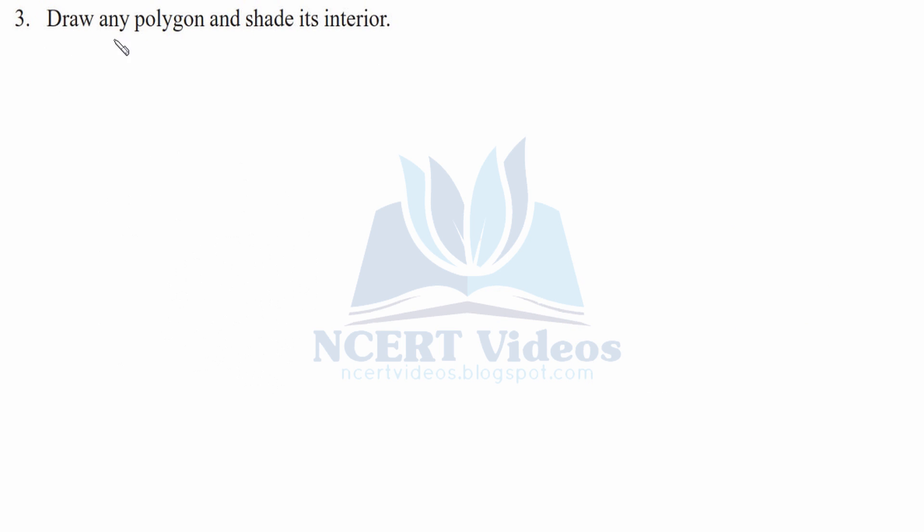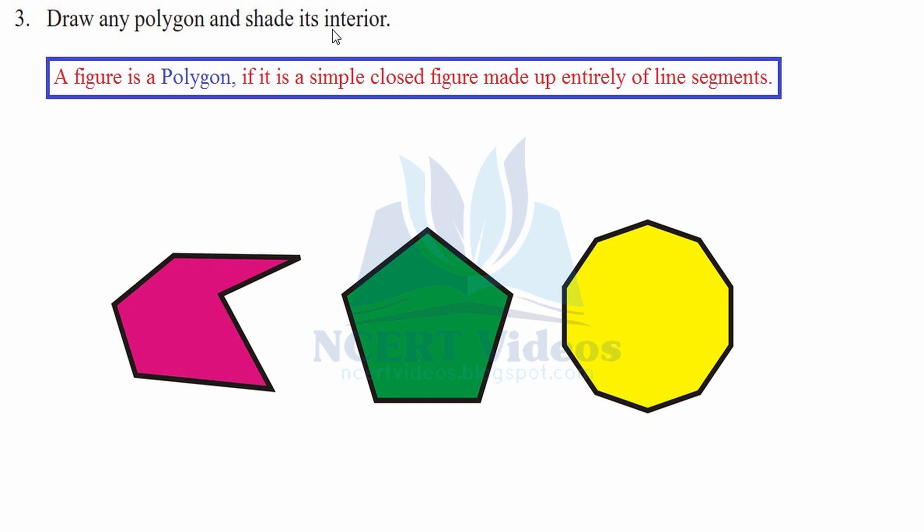Third. Draw any polygon and shade its interior. Now we will draw a polygon. A figure is a polygon if it is a simple closed figure made up entirely of line segments. So it is simple and it is closed.